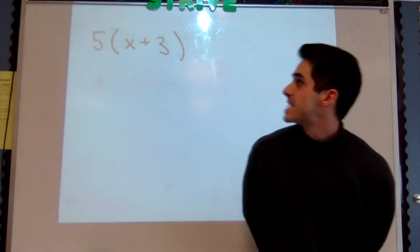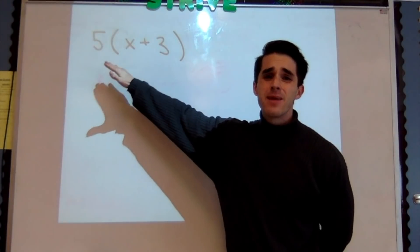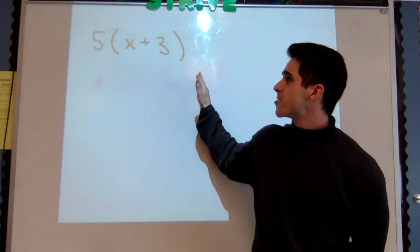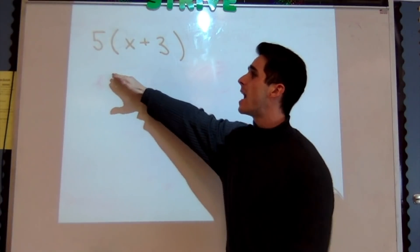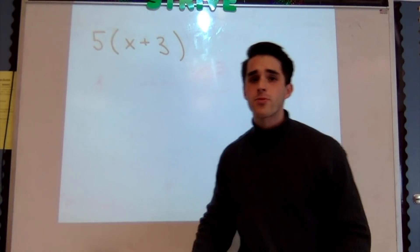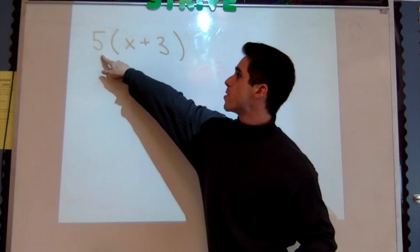So we're looking at our first example. I have 5(x + 3). Notice this isn't 5 times x plus 3, this is 5 times (x + 3), it's all in parentheses. What I'm gonna do is distribute this 5 over the x as well as over the 3.